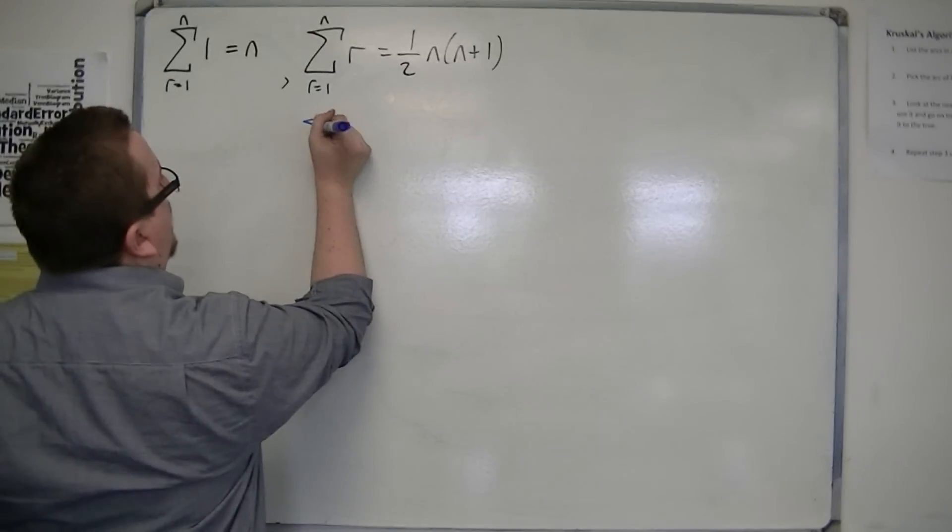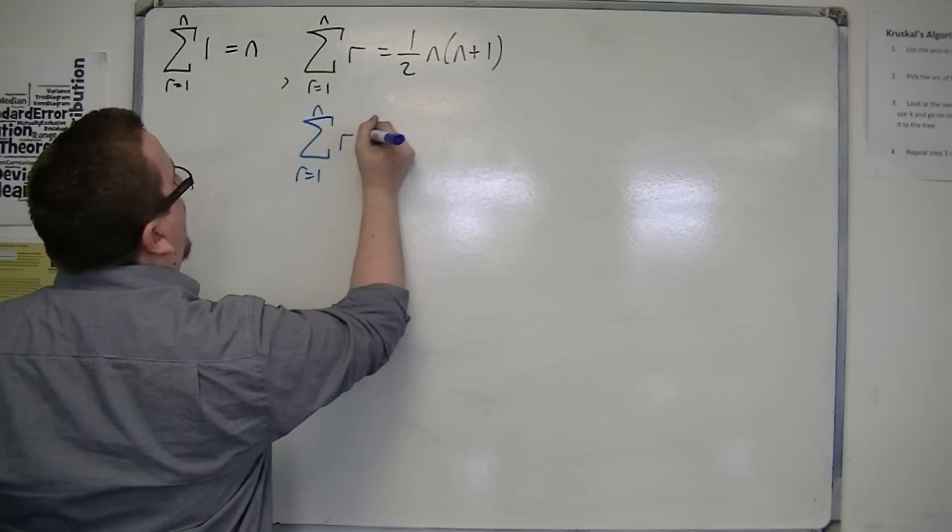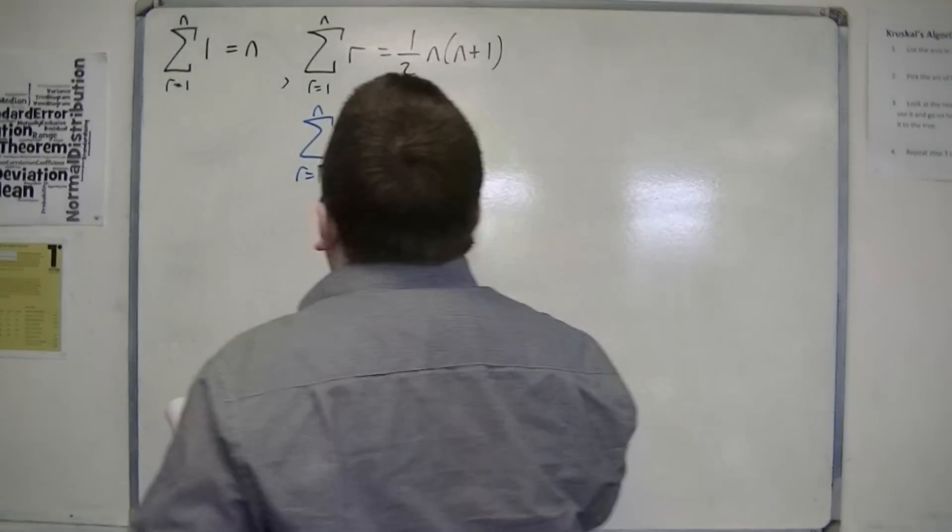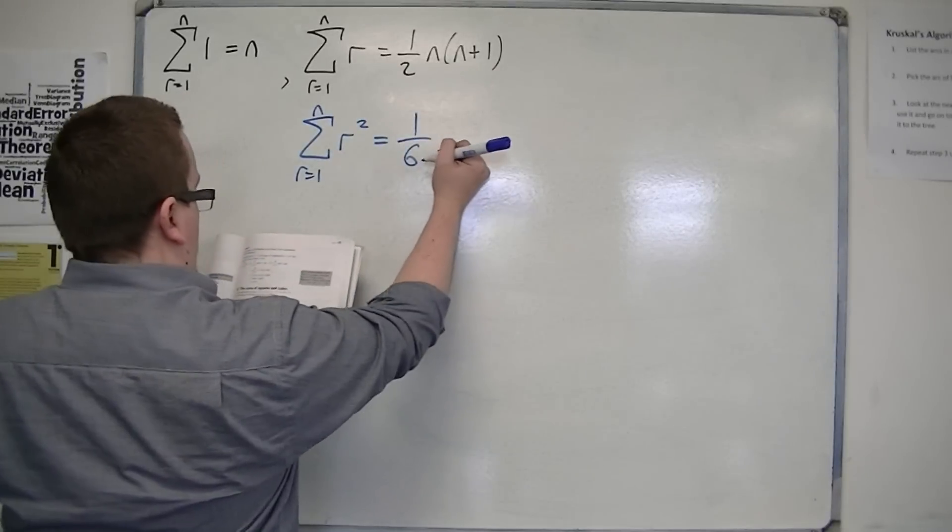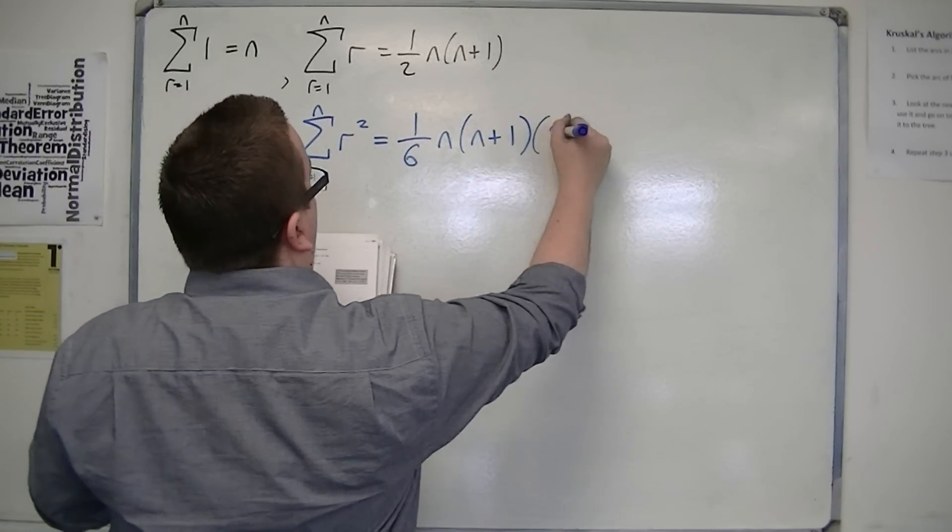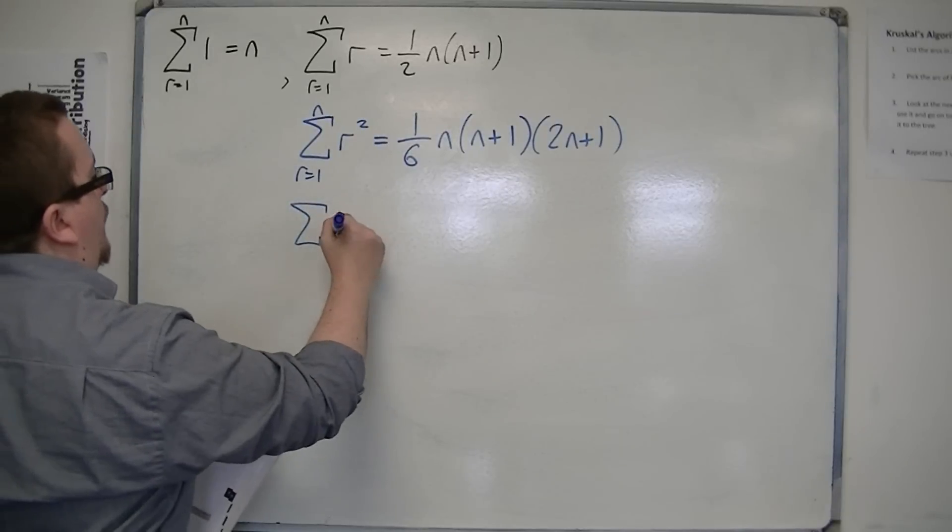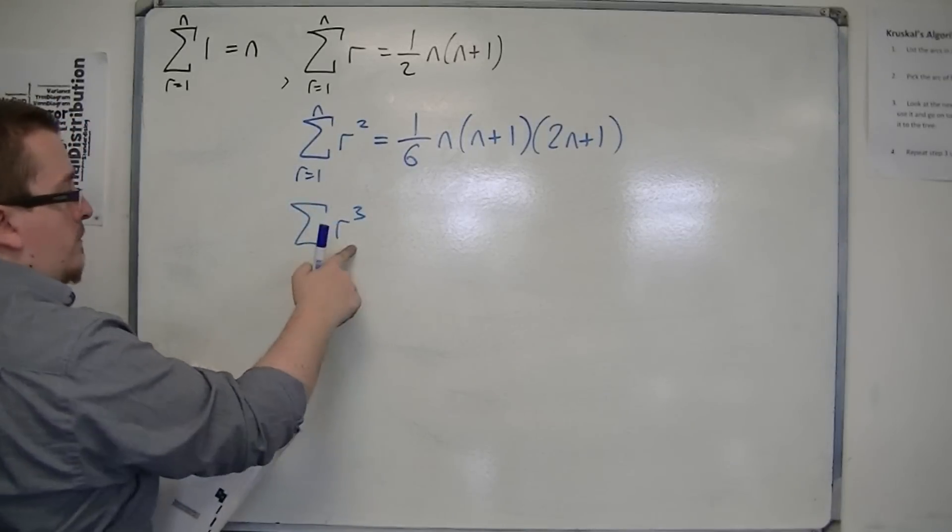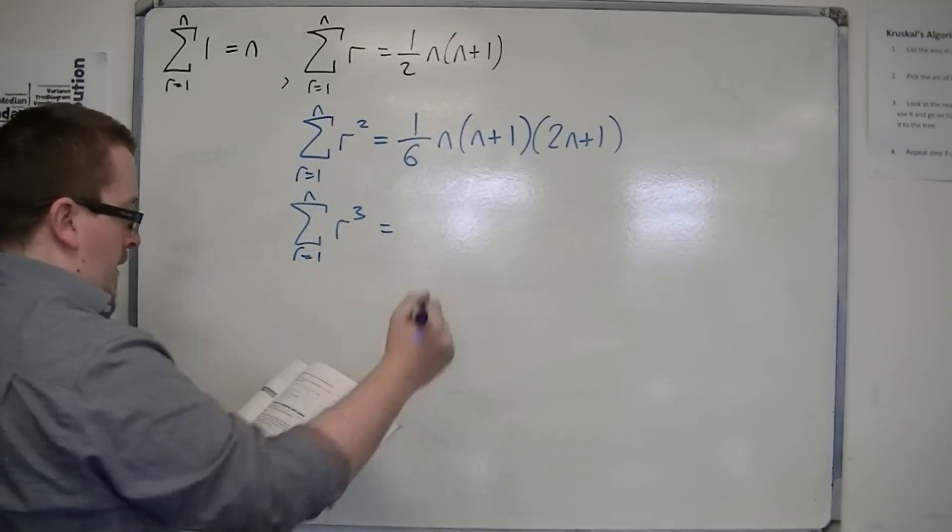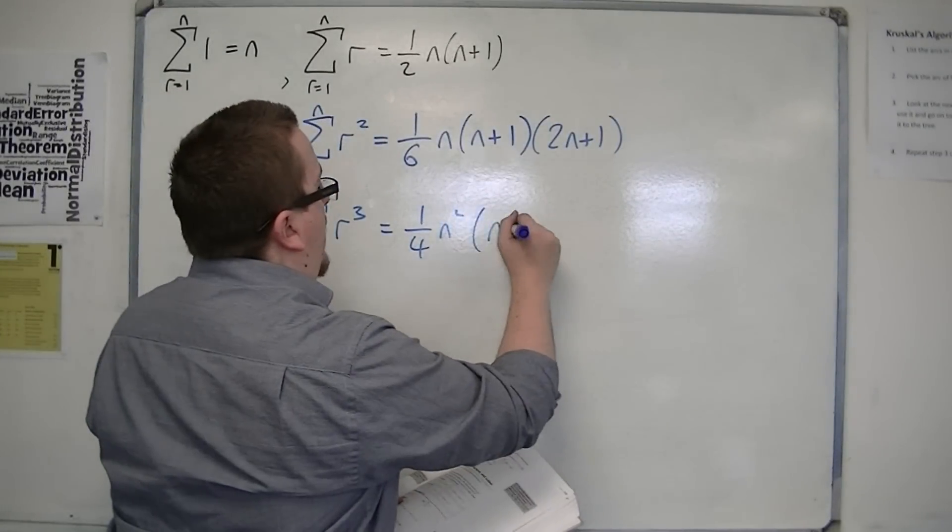So the sum from r is 1 to n of r squared, I've got to make sure I get this one right, is 1 sixth n times n plus 1 times 2n plus 1. And the sum of the first n cube numbers is 1 quarter n squared times n plus 1 squared.